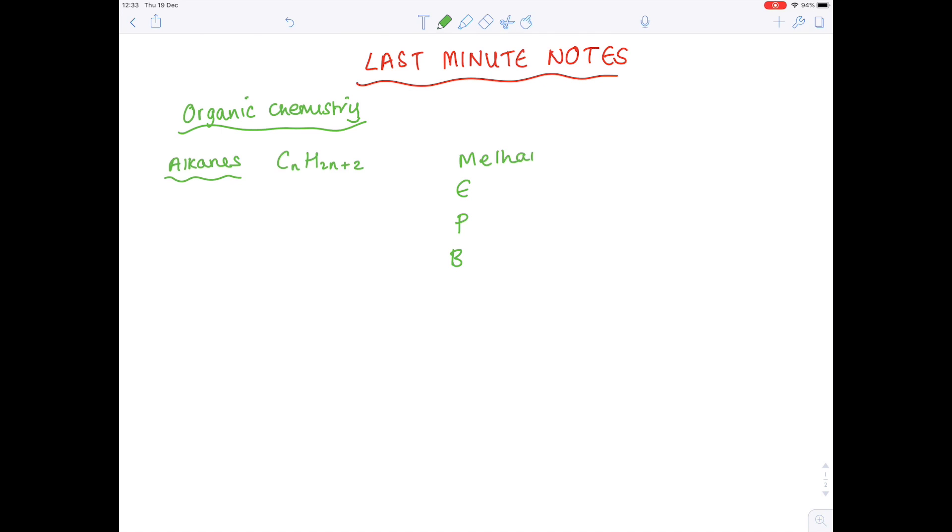Remember monkeys eat peanut butter to help you remember the first four members of the alkane family. So that's methane, ethane, propane and butane. In terms of their molecular formula, according to this general formula therefore methane would be CH4, ethane is C2H6, propane is C3H8, butane is C4H10.